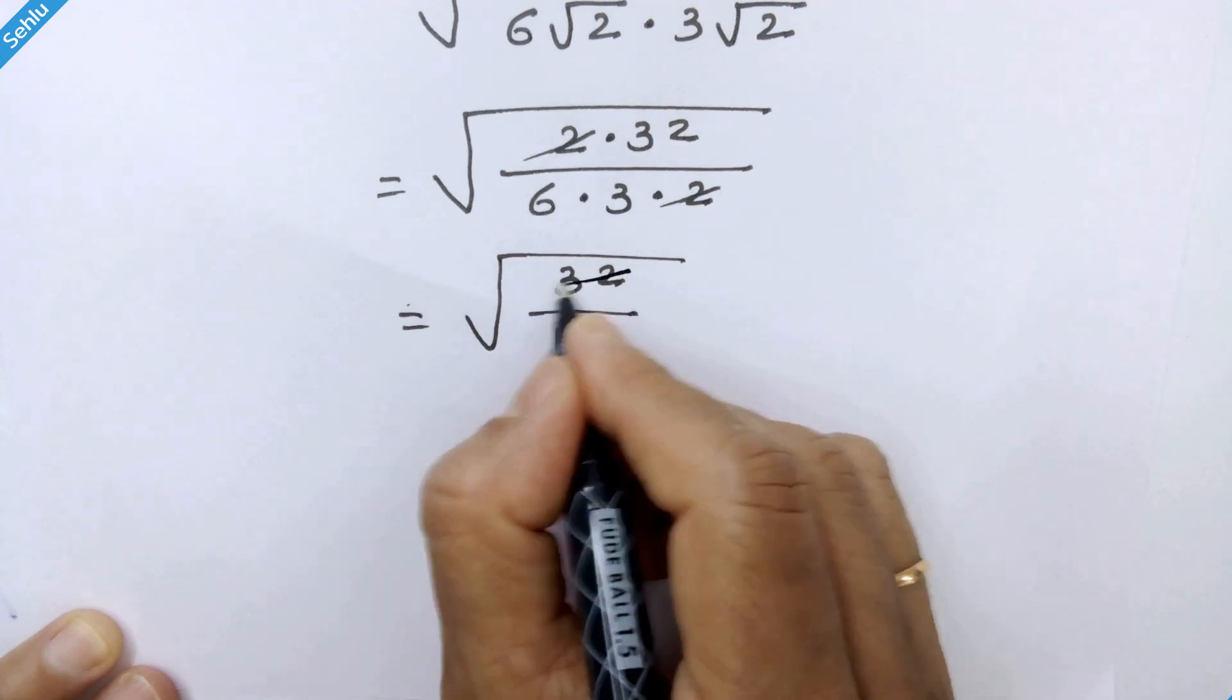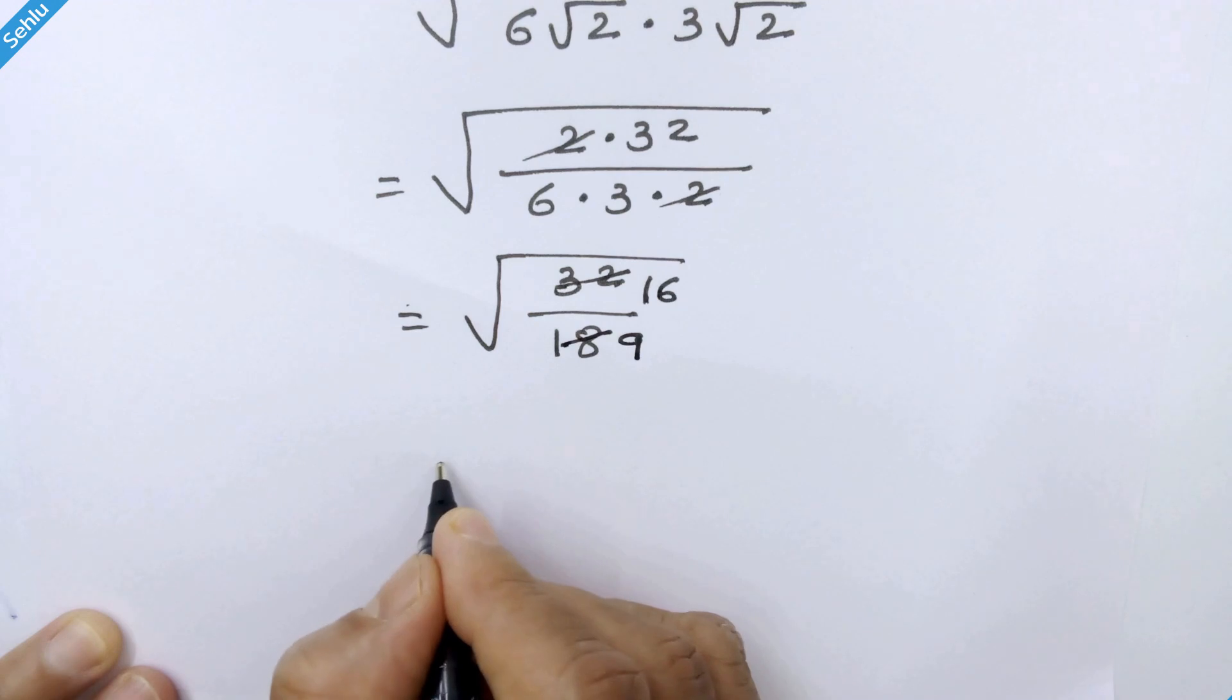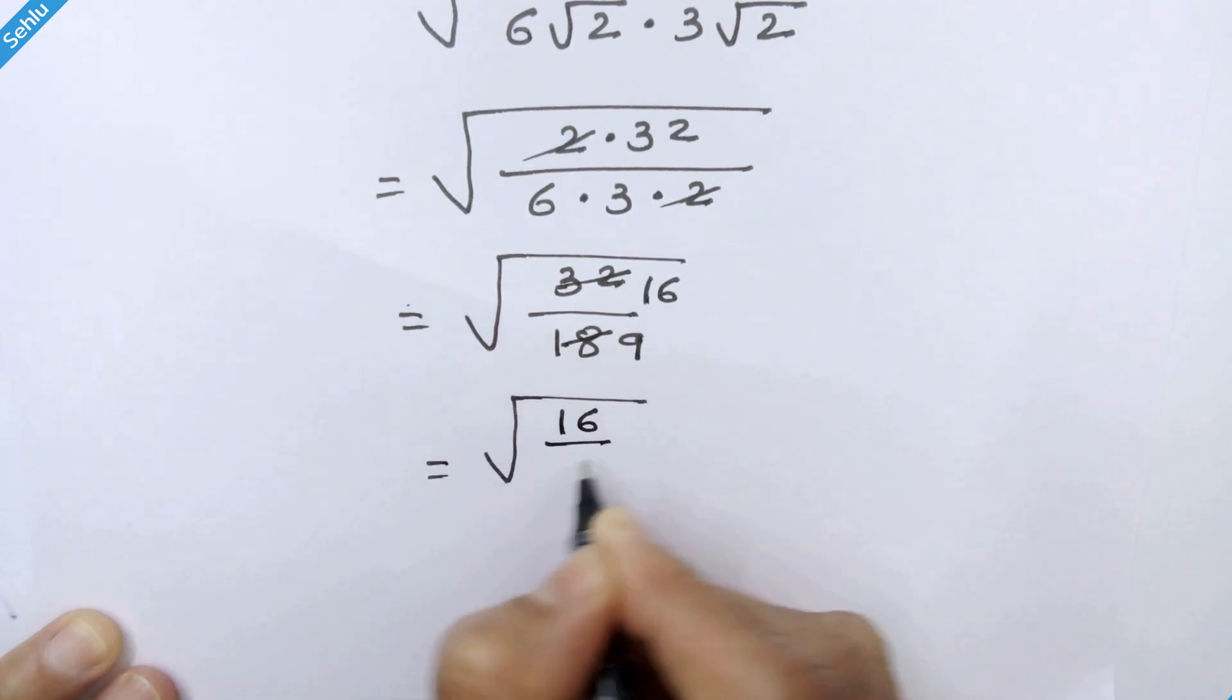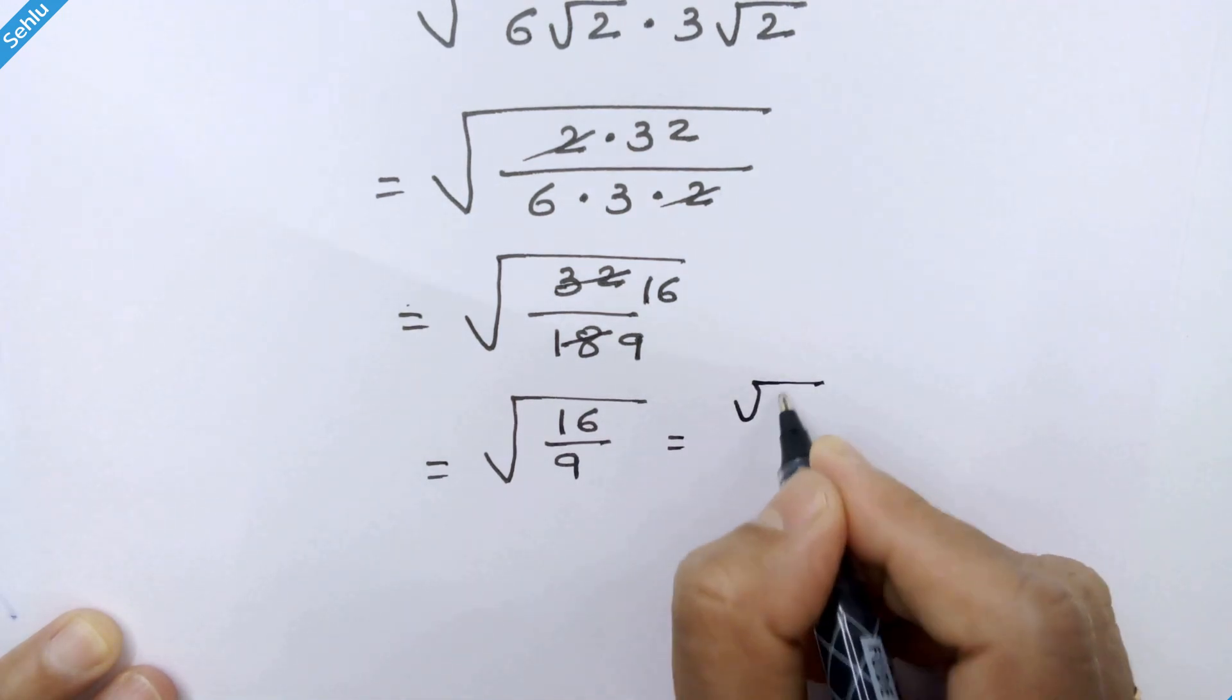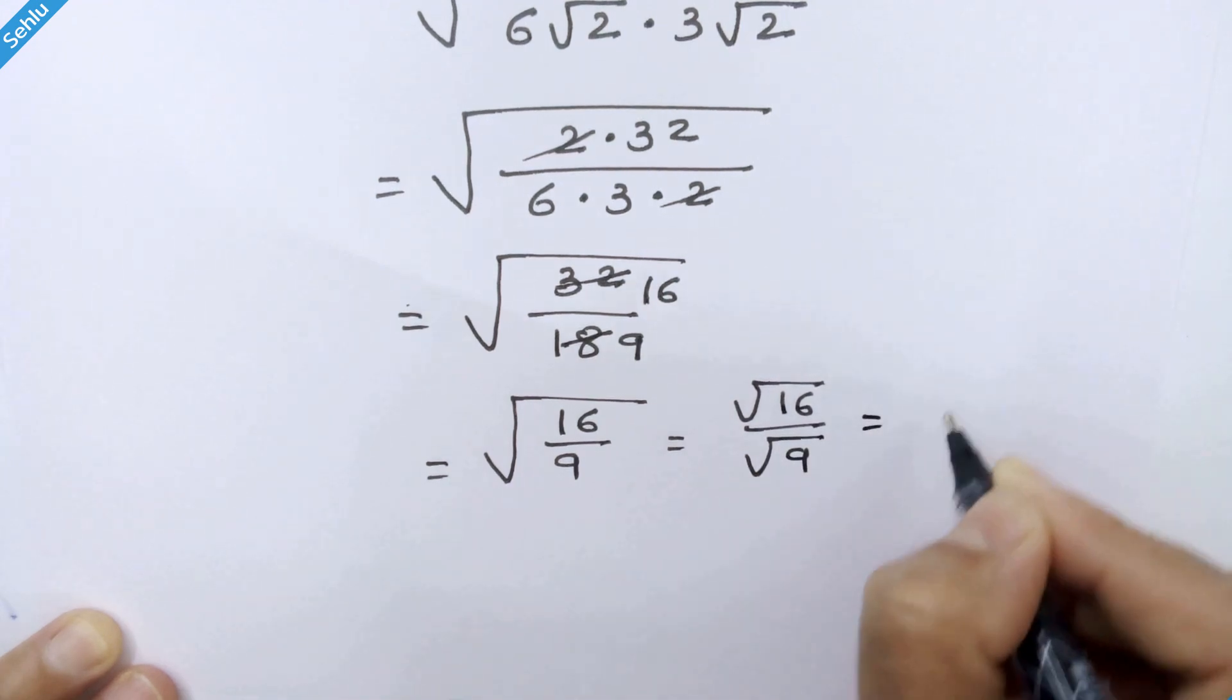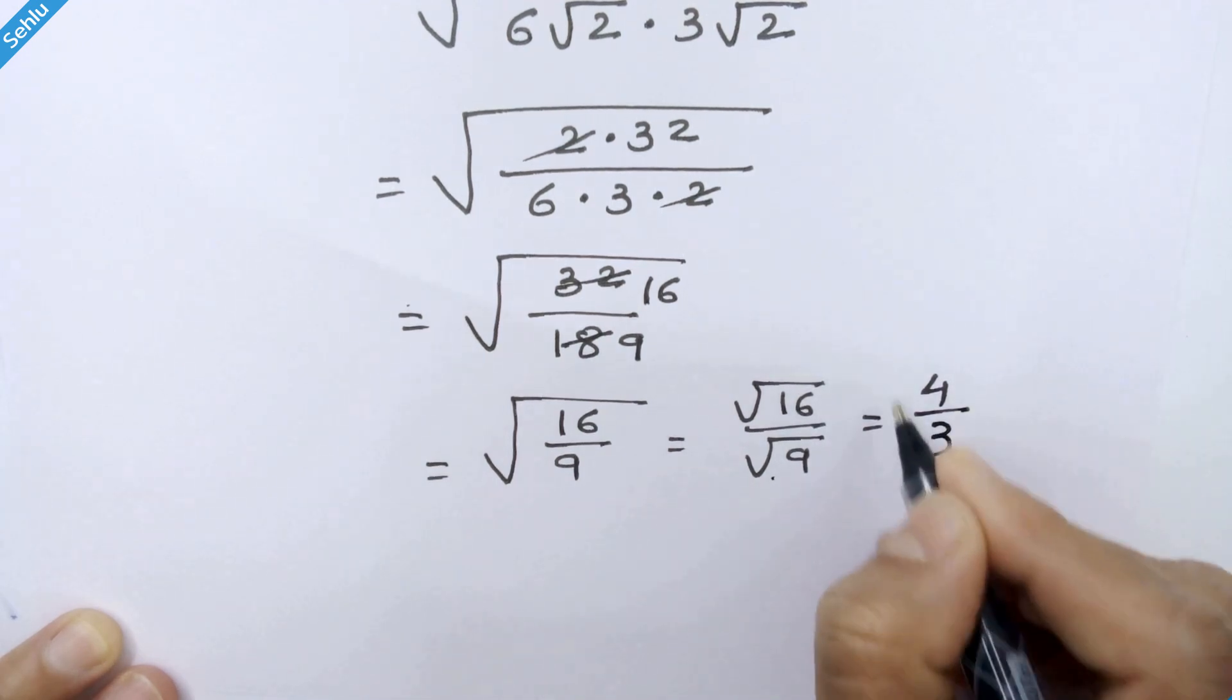Now 16 times 2 is 32 and 9 times 2 is 18. So we have square root of 16 over 9. So we can write it like square root 16 over square root 9. So it will be 4 over 3.